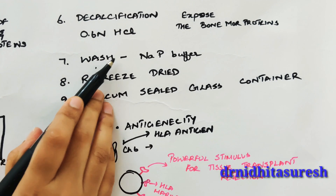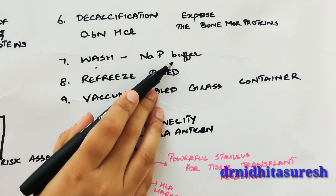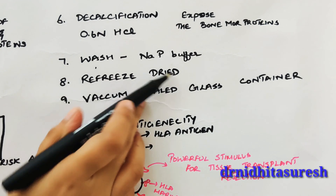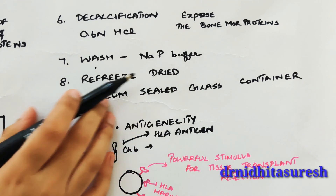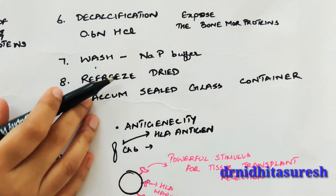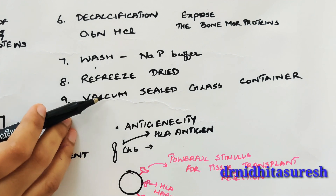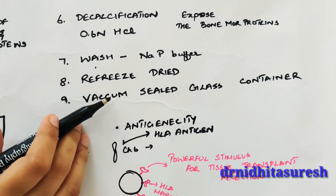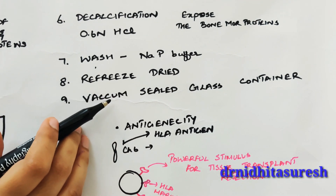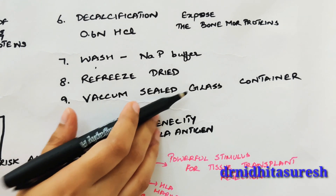After decalcification, the graft is washed with a sodium phosphate buffer to remove the acid, then refreeze-dried — but only if demineralization was performed. Otherwise, the process proceeds directly to the ninth step: sealing the graft in a vacuum-sealed glass container.